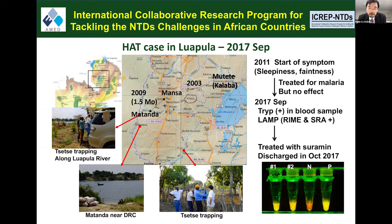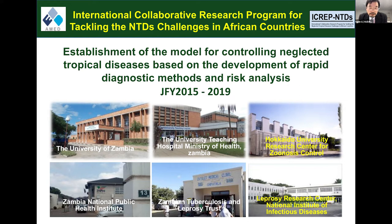By conducting nationwide surveillance, a nationwide risk map or hazard map has been created. Especially in certain areas, very high HAT prevalence has been evident. This diagnostic kit, used by Zambia's Ministry of Health and the university medical facility, enabled early diagnosis, and many lives were saved. Because of these results, many institutions want to join this effort. In Zambia, the National Health Institute and NGO Zambia Tuberculosis and Leprosy Trust are also members of the alignment, widening the scope of collaboration. This covers 2015 to 2019.